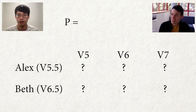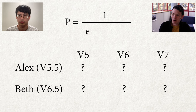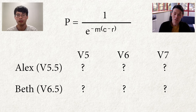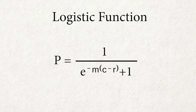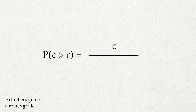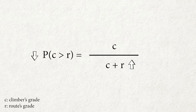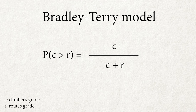We use a logistic function: probability of sending equals 1 divided by e to the power of the slope times the difference between the climber's grade and the boulder's grade, plus 1. One way to model the probability of a climber sending a route is the climber's grade over the climber's grade plus the route's grade. If the climber's grade and route's grade are the same, the climber has a 50% chance of sending. If the route is harder, the probability lowers, and vice versa. This model is called the Bradley-Terry model.